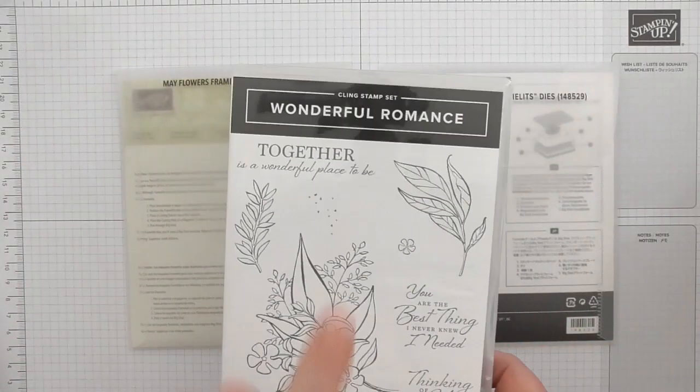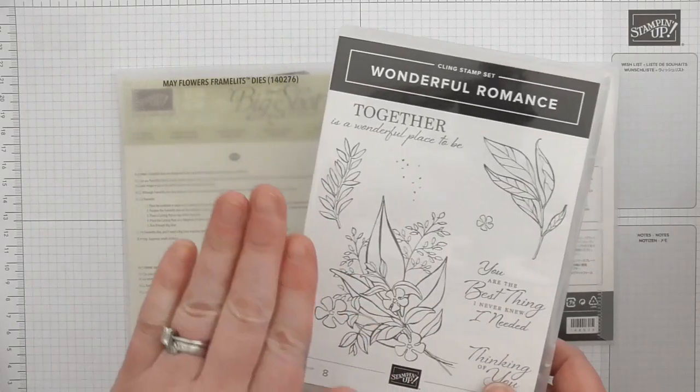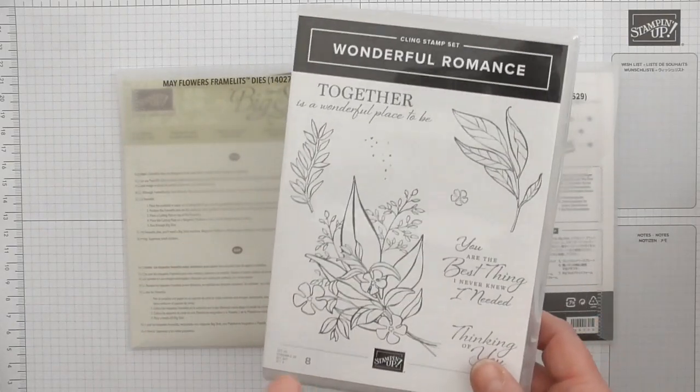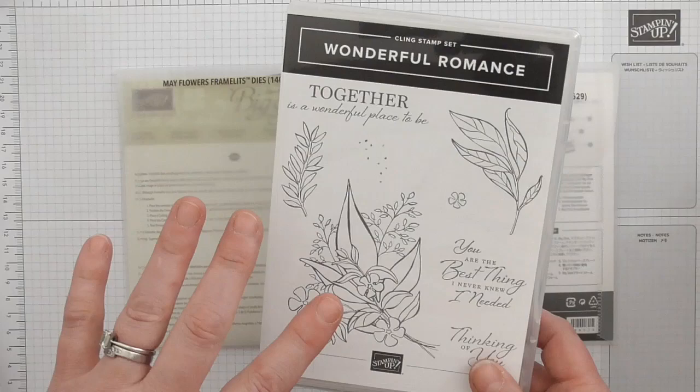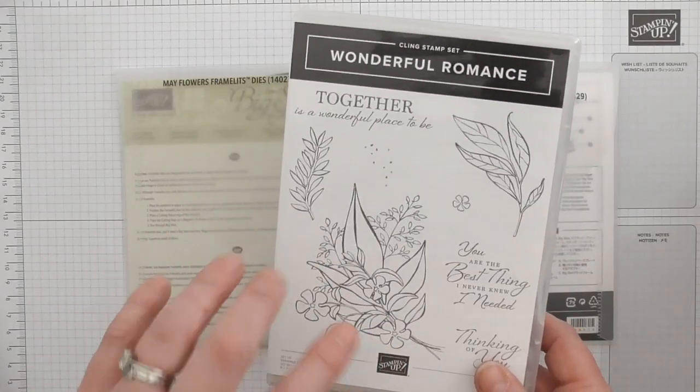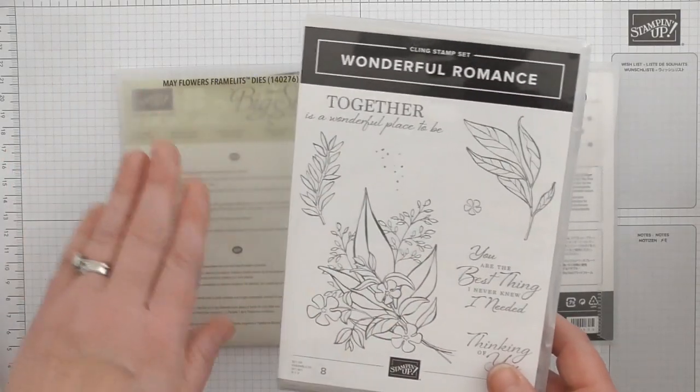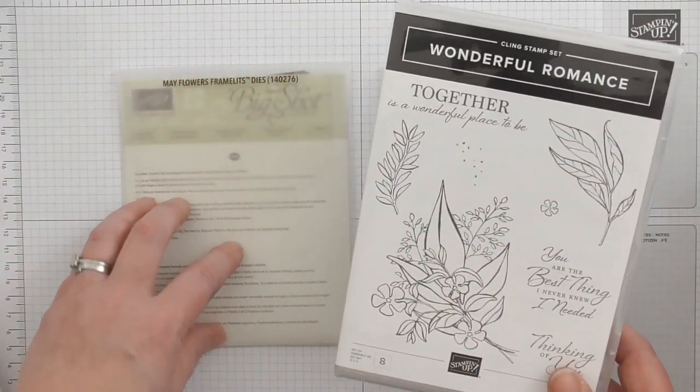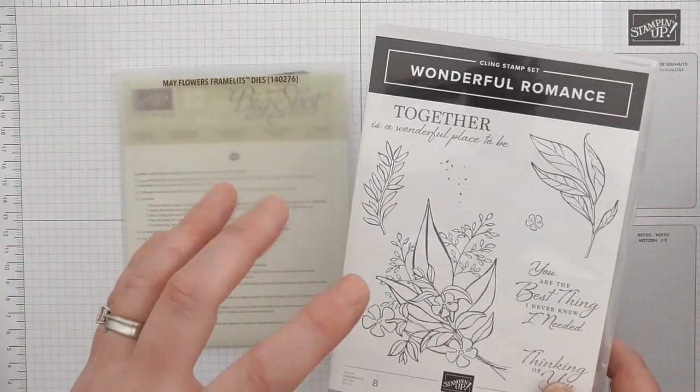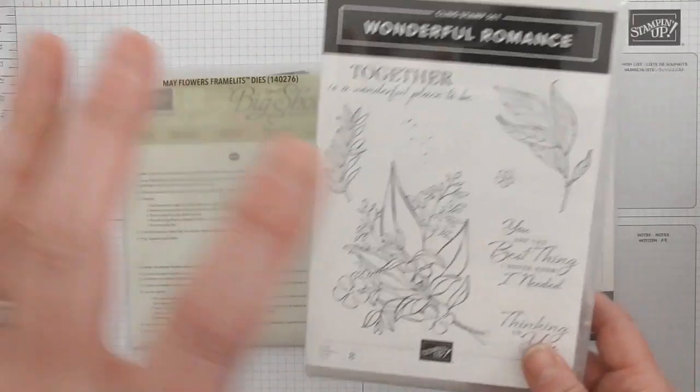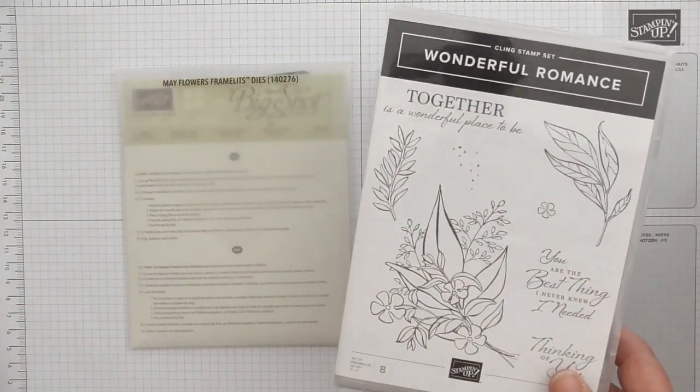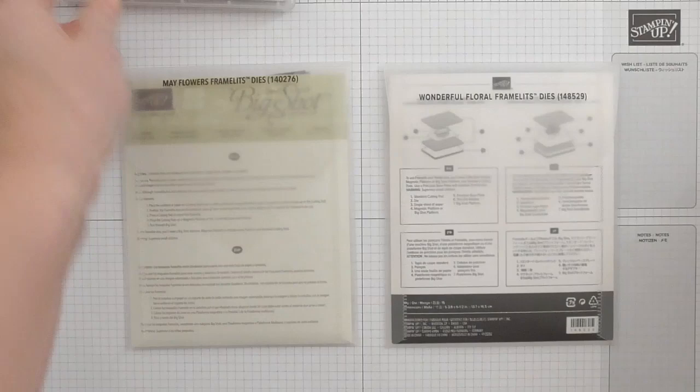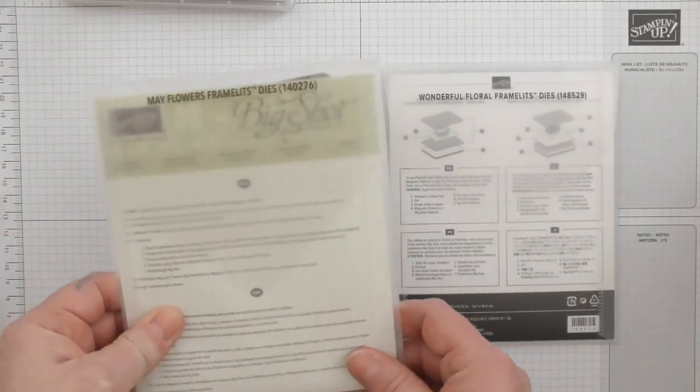First of all, I will tell you I do not add my dies to the coordinating stamp set and I'll tell you why. The reason being that I will forget about them—out of sight, out of mind. I don't always only use the dies with matching stamp sets. Sometimes I'll use them and coordinate them with other things. So if these are in with the stamp set I won't think to do that, so I do keep them separate.